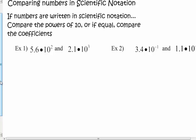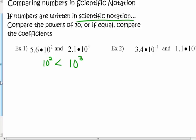Example one: 5.6 times ten to the second and 2.1 times ten to the third — both are written in scientific notation. Compare the powers of ten: ten to the second is less than ten to the third — a hundred is less than a thousand. So 5.6 times ten to the second is less than 2.1 times ten to the third. In example two, the powers of ten are the same, so compare the coefficients — 3.4 is greater than 1.1 — so 3.4 times ten to the negative first is greater than 1.1 times ten to the negative first.